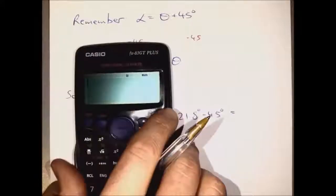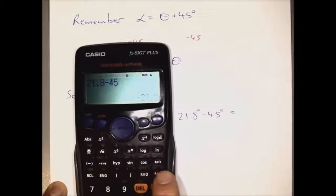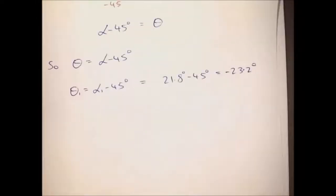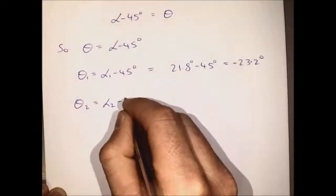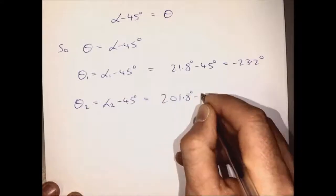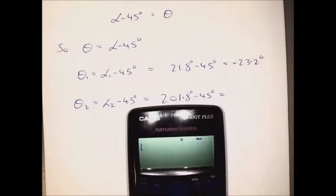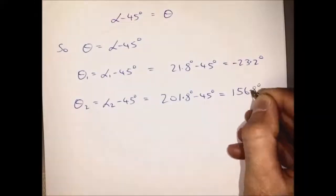So theta 1 we get minus 23.2 degrees, and for theta 2 using alpha 2 we get 156.8 degrees.